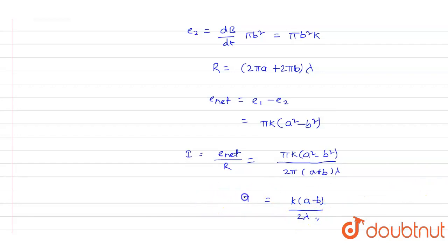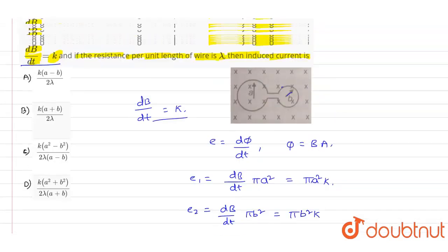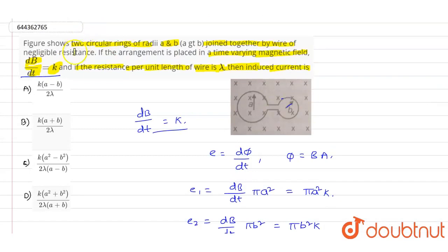This is the value of the current I. According to our obtained solution, out of these four options, if you look at option A: k(a - b)/(2λ), according to our obtained solution, option A is the correct answer for this question.